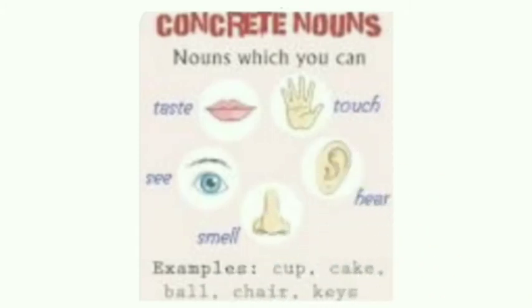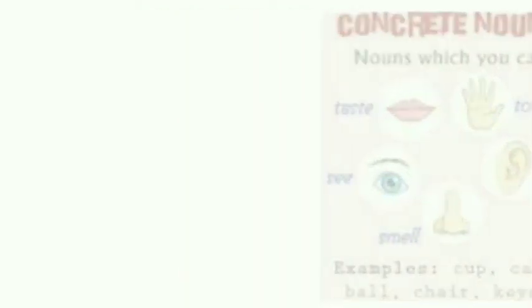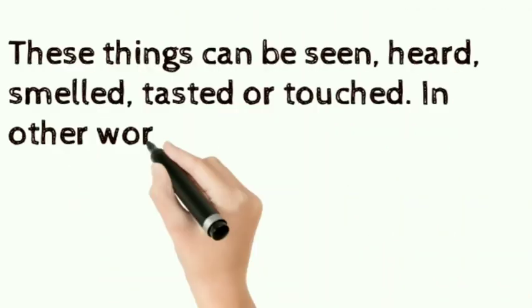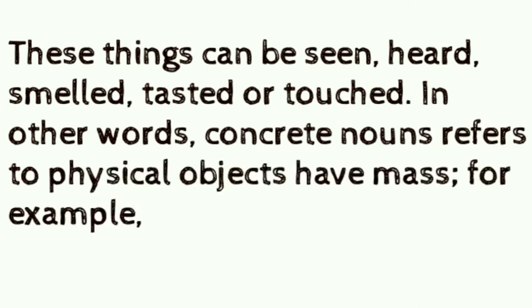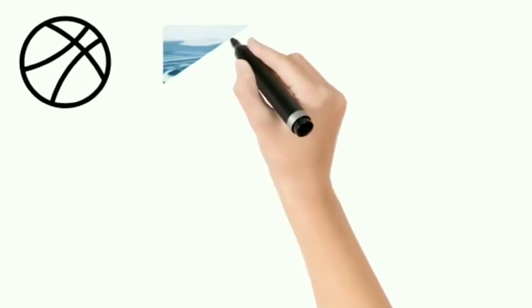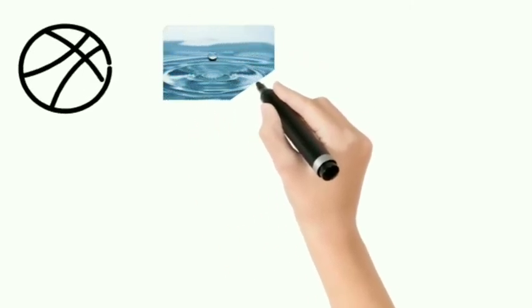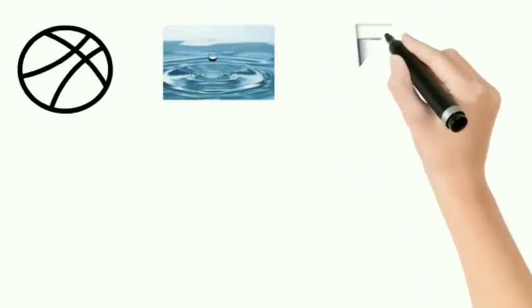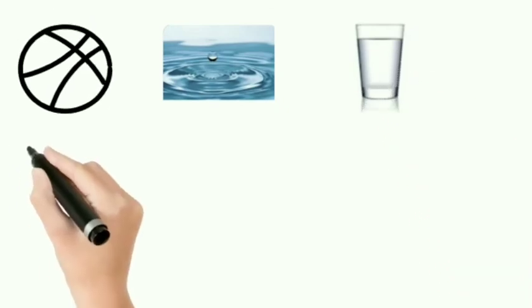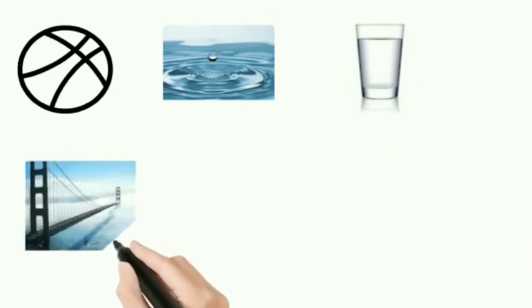For example, these things can be seen, heard, smelled, or tasted. In other words, concrete nouns refer to physical objects that have mass. For example: ball, water, glass, bridge.